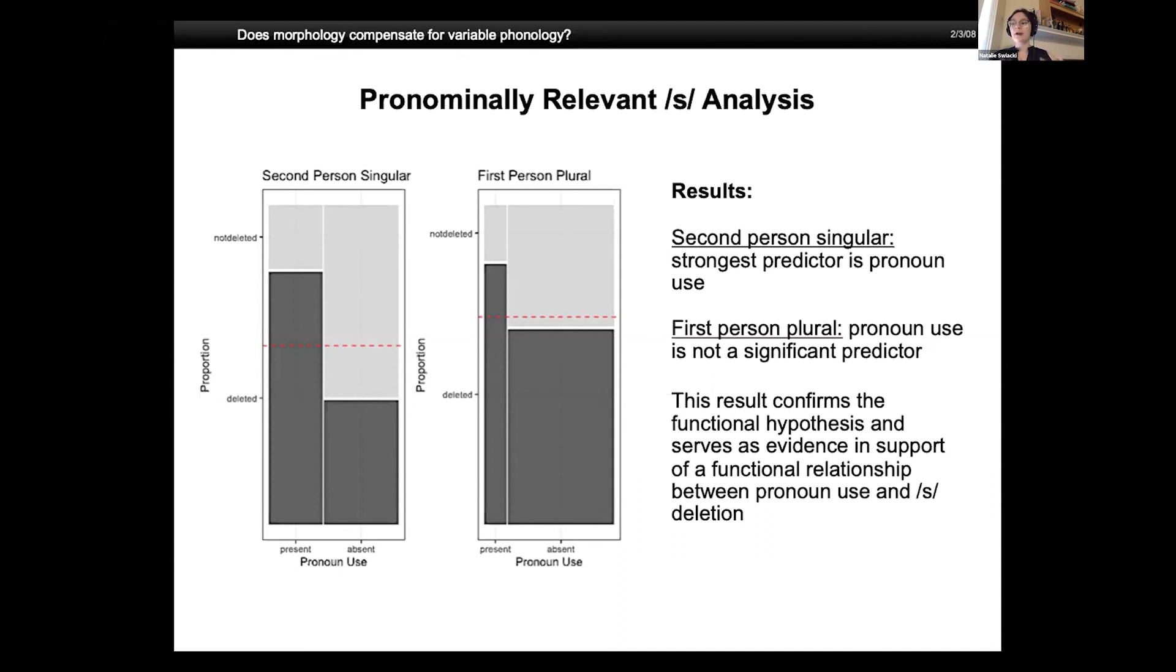When statistical analyses were carried out on each of these data sets to test the predictive power of pronoun presence on S deletion, it was found that pronoun presence was the strongest predictor of S deletion for the second person singular form, but that it was not a significant predictor of S deletion at all for the first person plural. This result is taken as evidence in support of the relationship between the high rates of S deletion and pronoun presence in the Caribbean dialects, and in support of the idea of functional compensation to preserve important information.